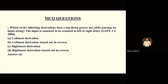Which derivation does a top-down parser use while parsing an input string scanned left to right? The answer is A: leftmost derivation. In top-down parsing we start with the start symbol and compare the right-hand side of productions against the first piece of input. A top-down parser is called an LL parser because it parses input from left to right and constructs a leftmost derivation.